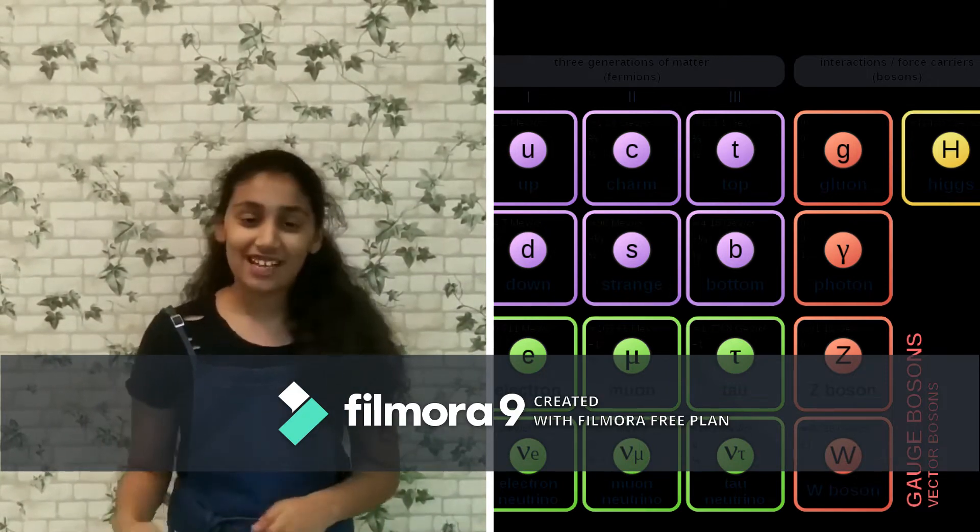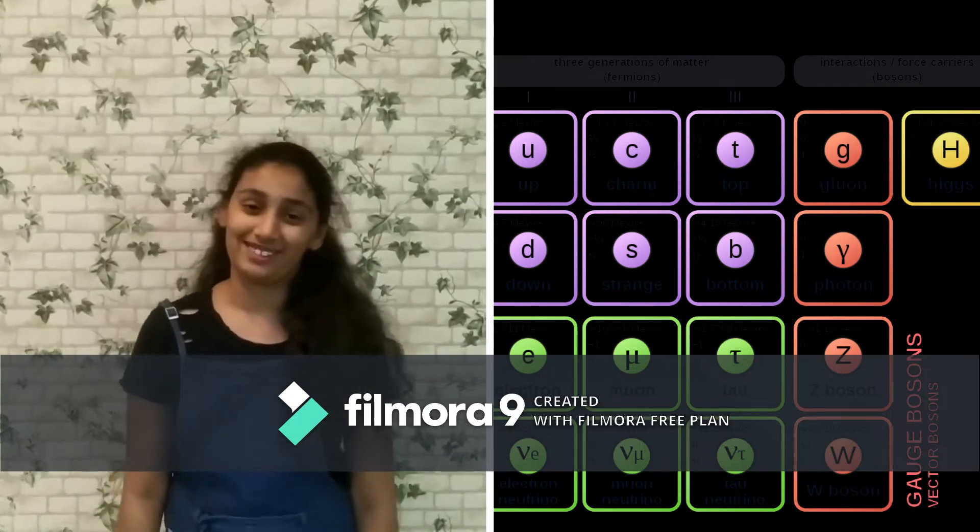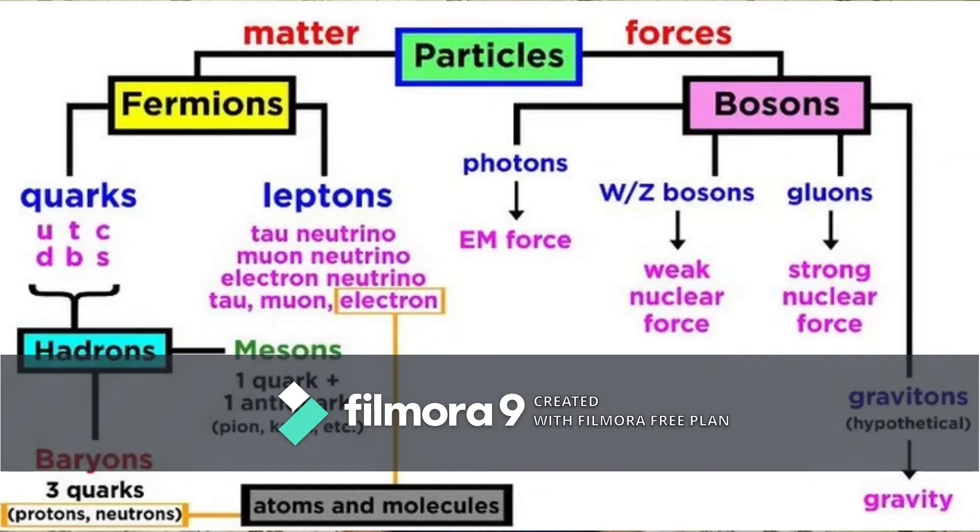And the model that categorizes and describes all of them is the standard model of particle physics. The particles in the universe can be divided into two categories: fermions and bosons. Fermions are the ones that make up all the matter, and bosons are the force carriers.